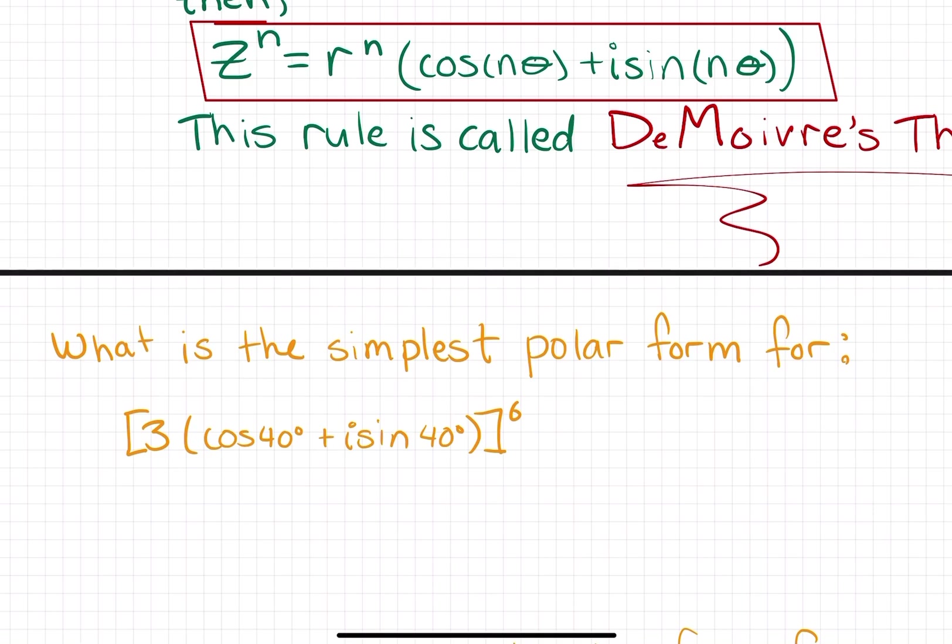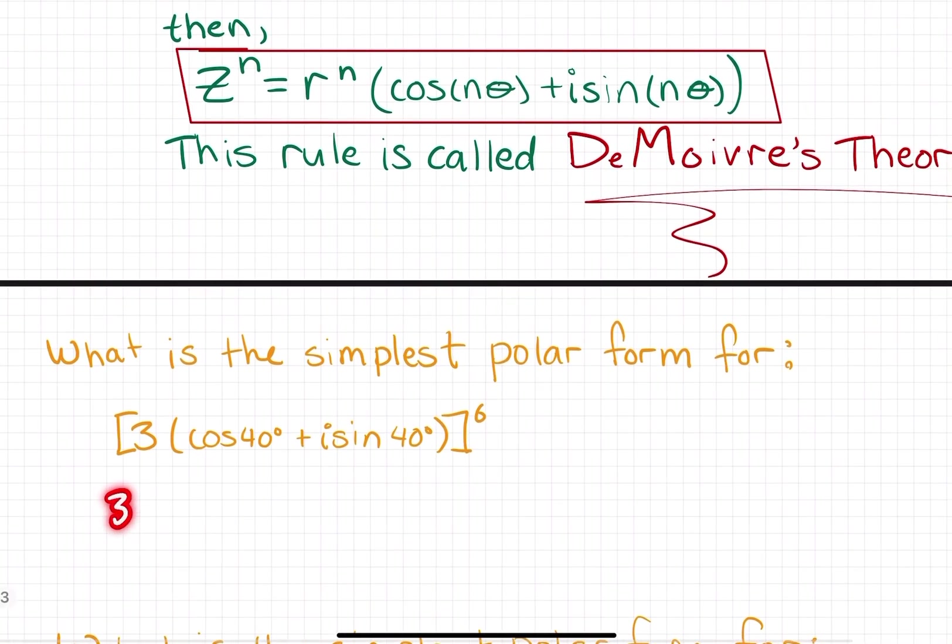We have this complex number 3 CIS 40 degrees, and we're going to simplify this after raising it to the power of 6. Following De Moivre's Theorem, all we have to do is raise 3 to the power of 6, and then CIS with 40 times 6. So cosine 240 degrees plus i sine 240 degrees. That's pretty much done.